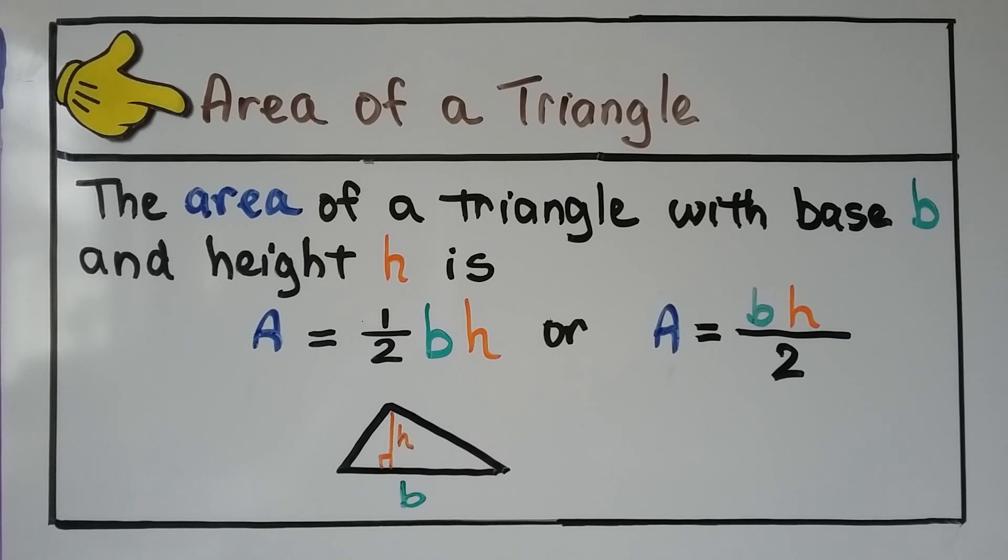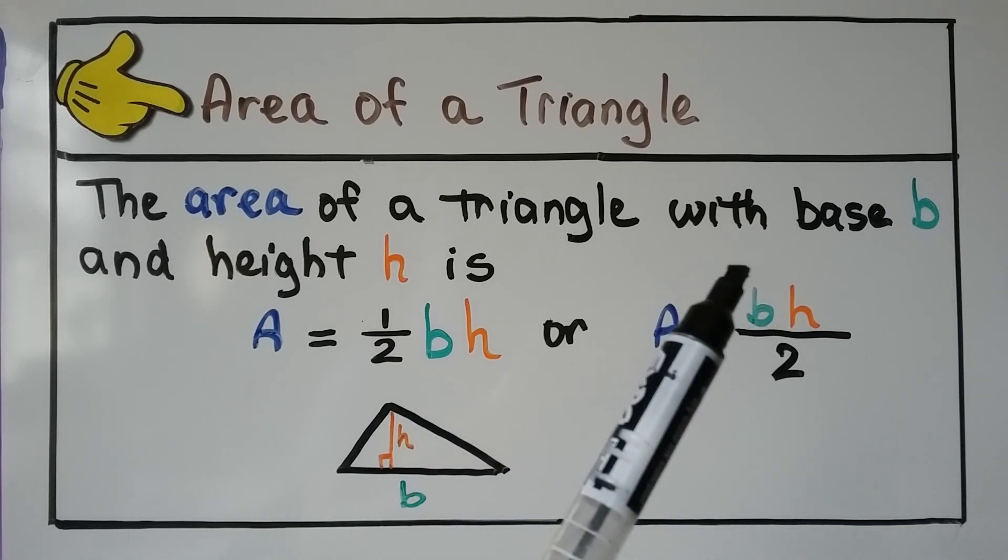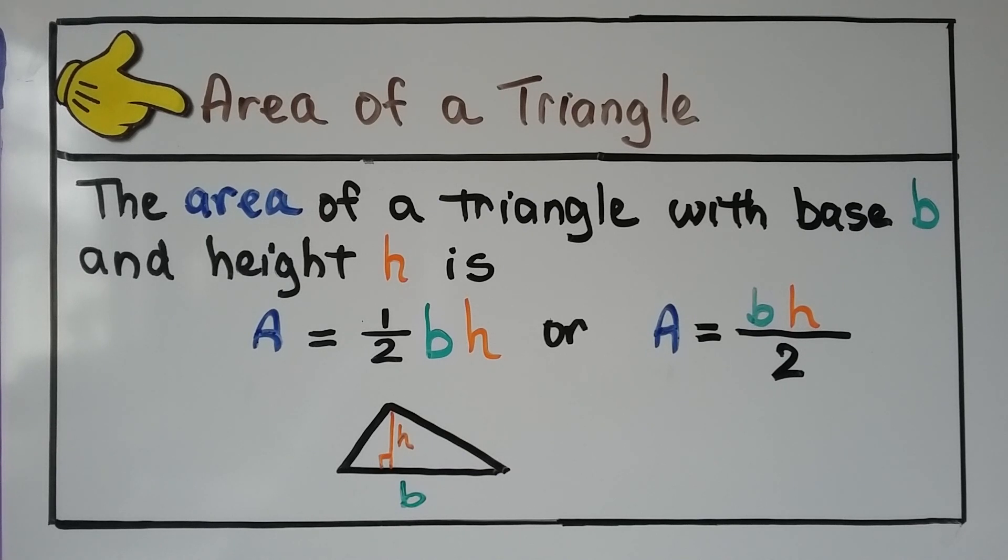So for the area of a triangle with base b and height h, our formula is A equals half base times height. We can also say area equals the quotient of the base times the height and 2. Either way, we'll get the same answer.